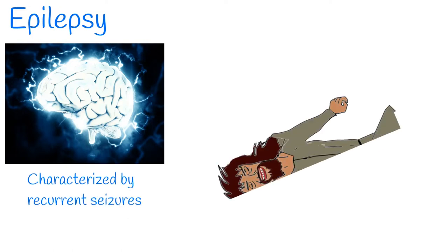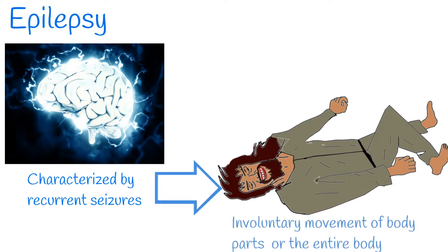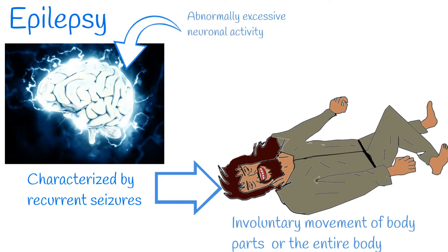Epilepsy is a chronic brain disease that can affect people of all ages. It is characterized by recurrent seizures, which are brief episodes of involuntary movement of body parts or the entire body, sometimes accompanied by loss of consciousness. Seizures are caused by abnormally excessive or synchronous neuronal activity in the brain, called electrical discharges in a group of brain cells.